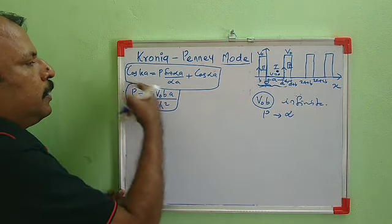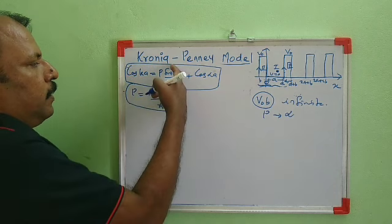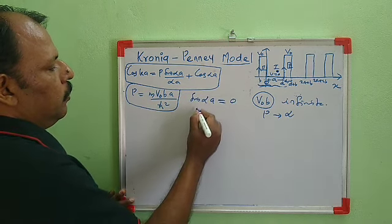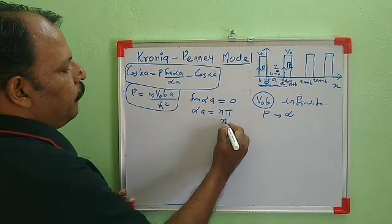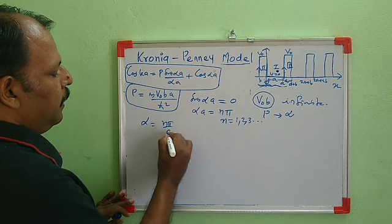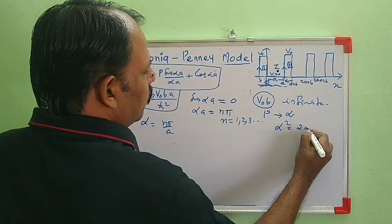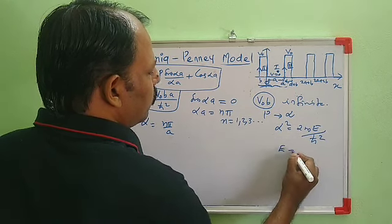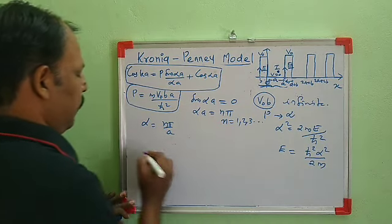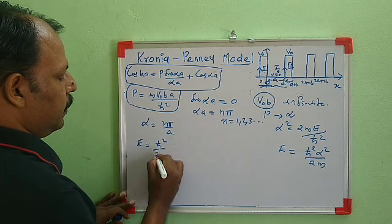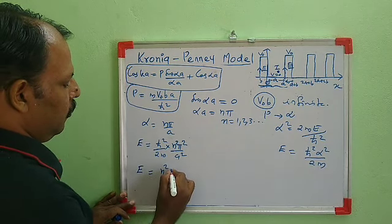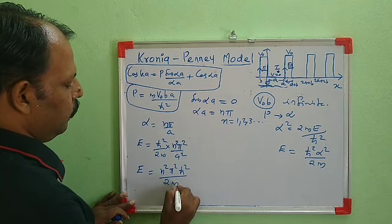When P tends to infinity, the solution has a significant value only when the sin(αa) term equals zero. So sin(αa) = 0, meaning αa = nπ, where n = 1, 2, 3, etc. Therefore α = nπ/a. Since α² = 2mE/ℏ², the energy is E = ℏ²α²/2m = n²π²ℏ²/(2ma²).